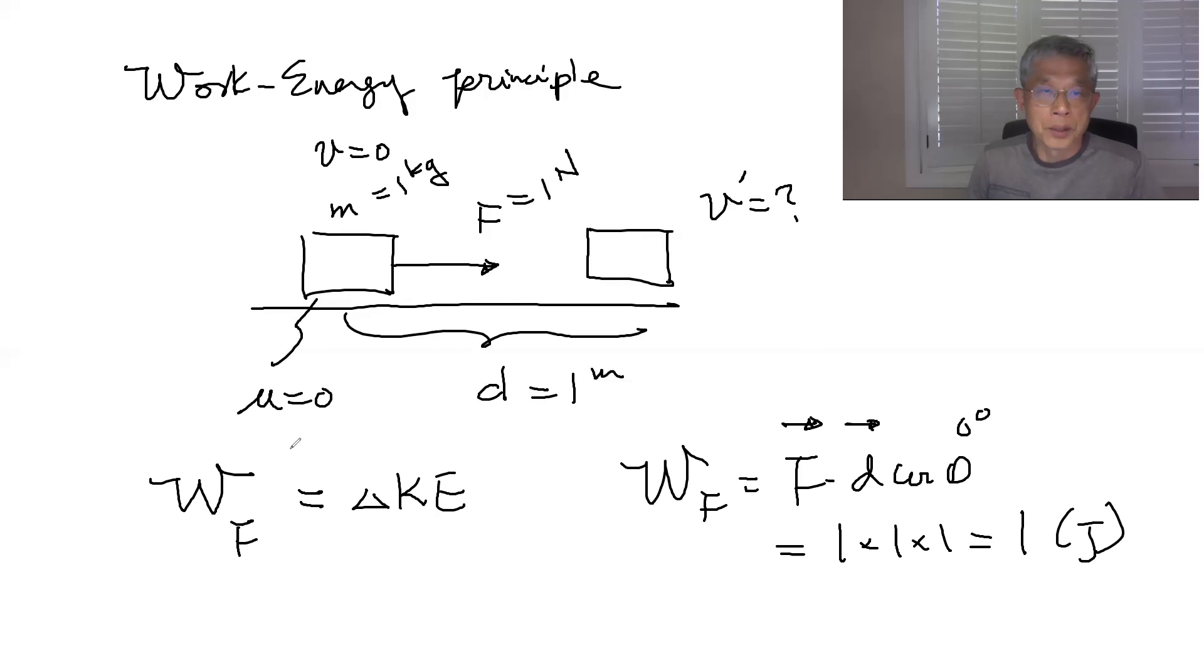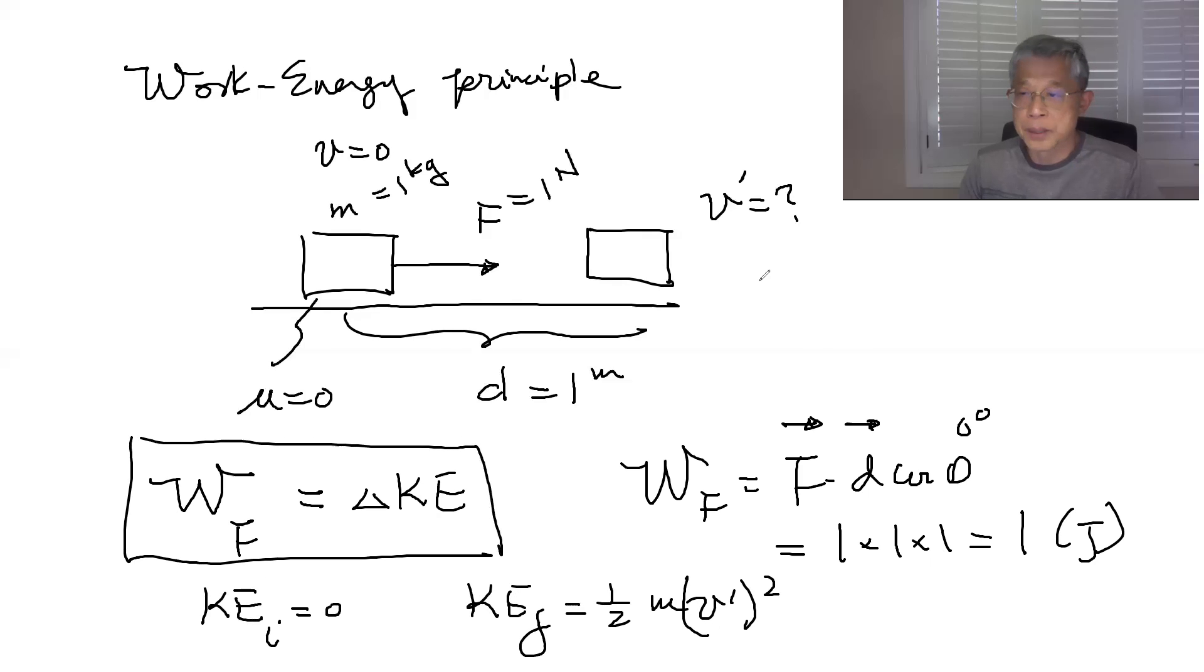And delta KE. So in the beginning KE initial is equal to zero and KE final is equal to one half m v prime squared. So then using this work-energy principle which is given as this, we can then say this work done is equal to one joule which is equal to delta KE which is equal to one half or equal to KE final minus KE initial.